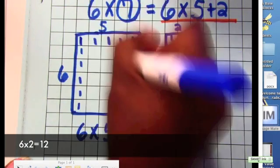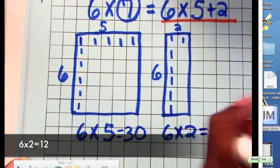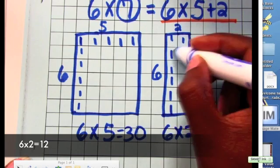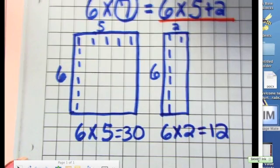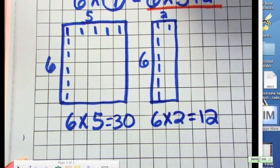And if I count all the boxes, I should have 30. And over here, six times two equals 12. And again, if I went in and counted all the boxes, I would see that it was 12. So that's a way that you can check yourself if you aren't sure about your multiplication facts at this time.